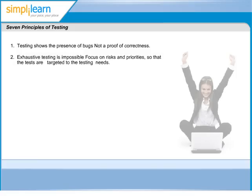The second principle states that, as already discussed, testing everything — that is, all combinations of inputs and preconditions — is not feasible except in trivial cases. We need to use risks and priorities to focus testing efforts.